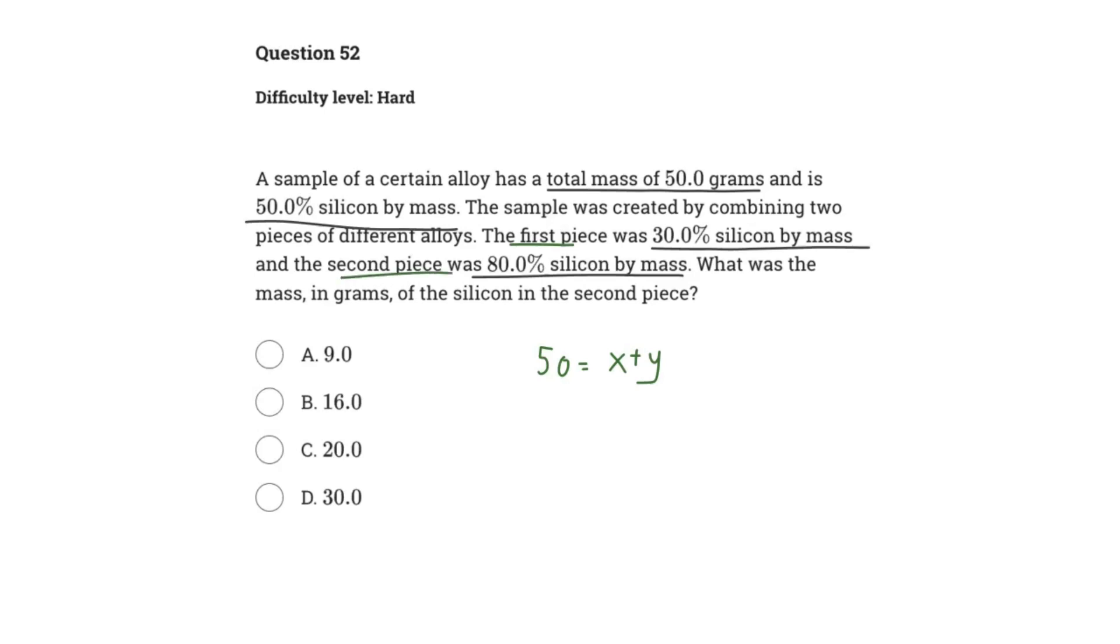So how exactly do we do it? Well, we have to read between the lines. It says that 50% of that 50 grams is silicon, so 50 divided by 2 is 25 grams. So we only have 25 grams of silicon in that sample. Therefore, we can set 25